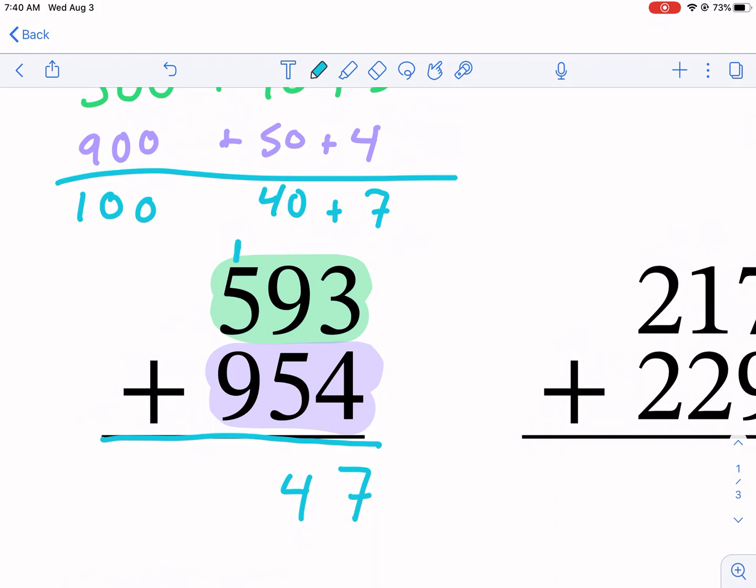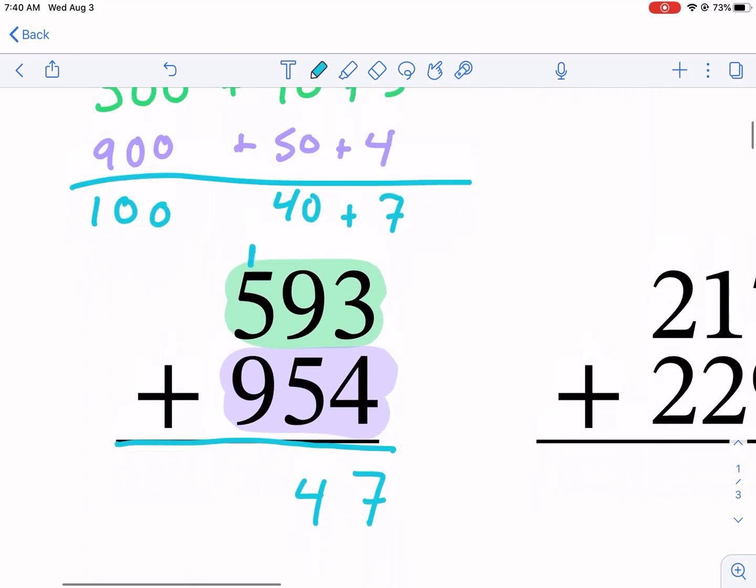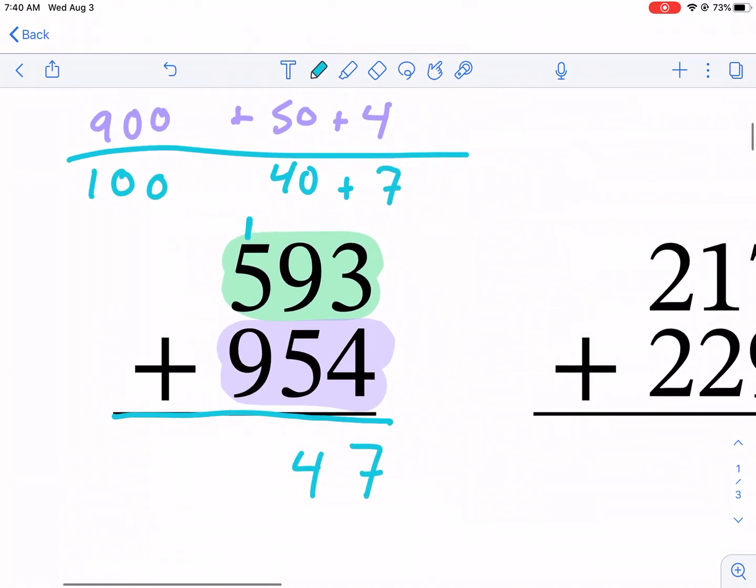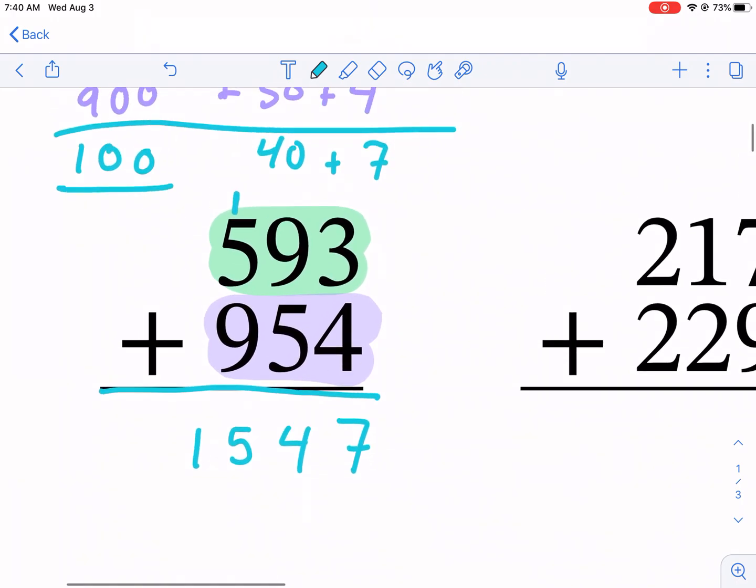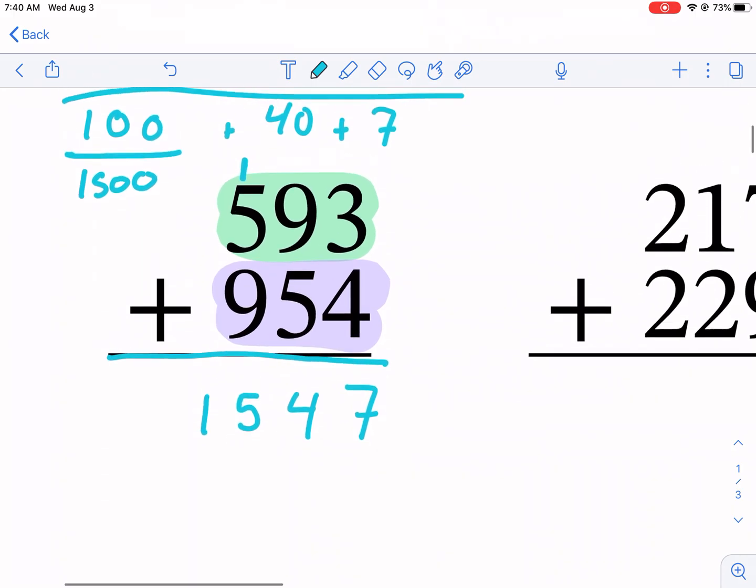Now we have 500 plus 900 plus that 100, which equals 1,500. We write 15. Why don't we write 1,500? Well, 1,500 plus 40 plus 7 equals 1,547. You just need to write the place at the end.